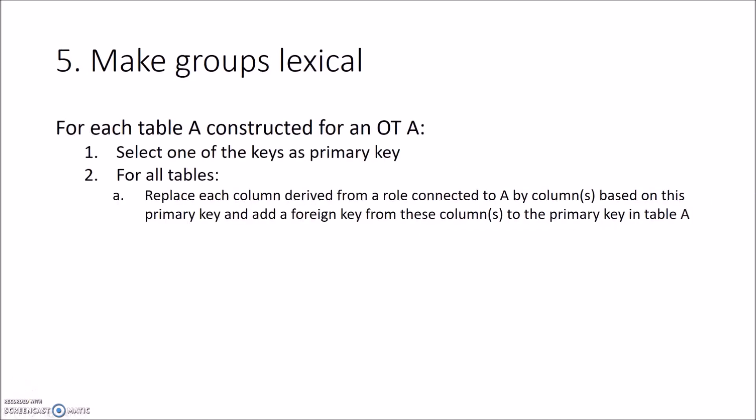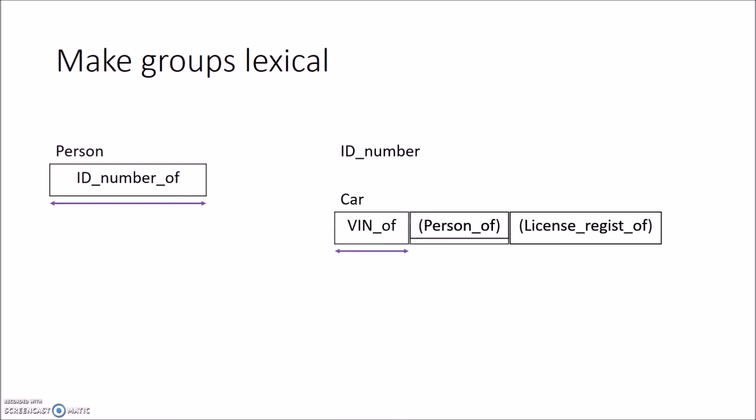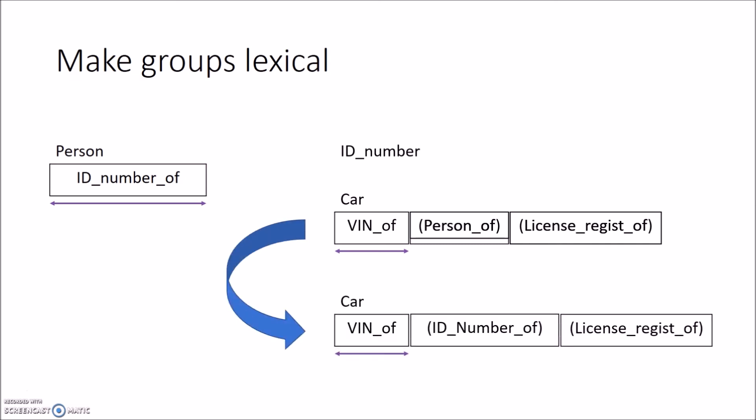In the fifth step, we make each group lexical. For each table A constructed for an object type A, select one of the candidate keys as primary key. Then for each table connected to A via a role, replace each column based on this primary key by the primary key column composition of A, and add a foreign key from these columns to the primary key in table A. We take 'ID number of' as the primary key for 'person'. Person is connected to ID number by a role, but ID number doesn't have any columns based on this primary key. Person is also connected to 'car' by a role, and car contains column 'person of' which was derived from person — so we replace this column with the lexical primary key column of person and add a foreign key from this column to the primary key of person.